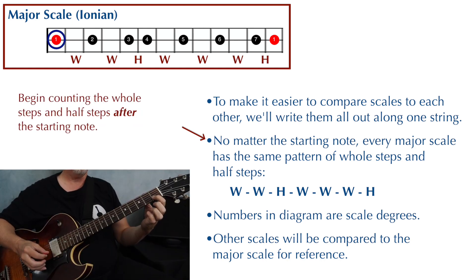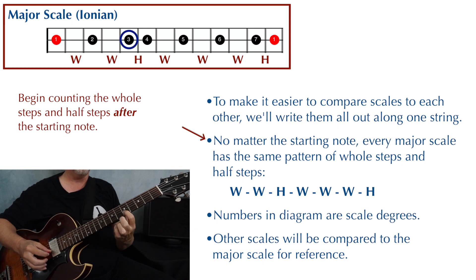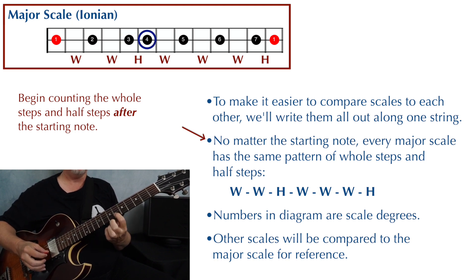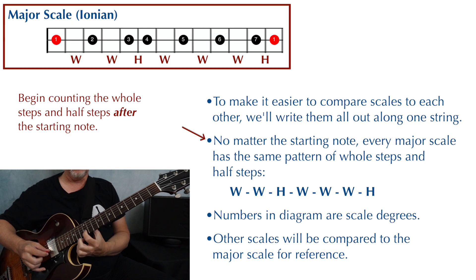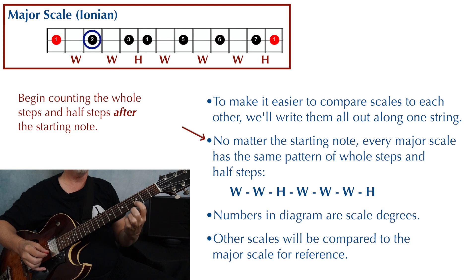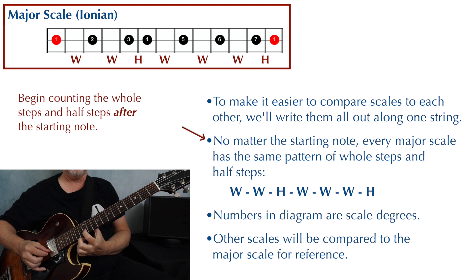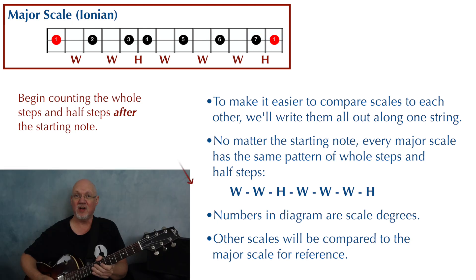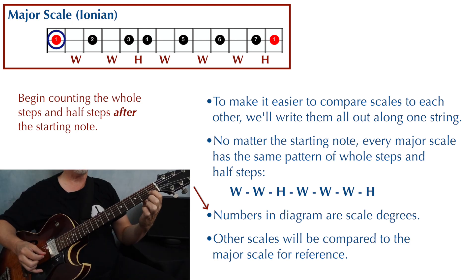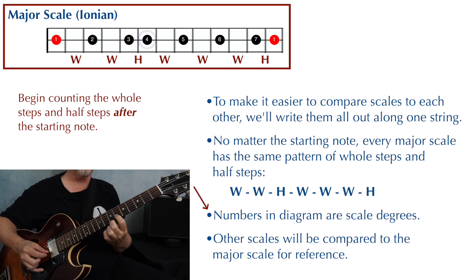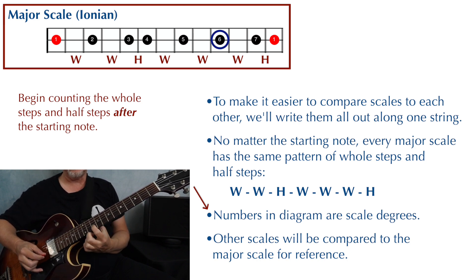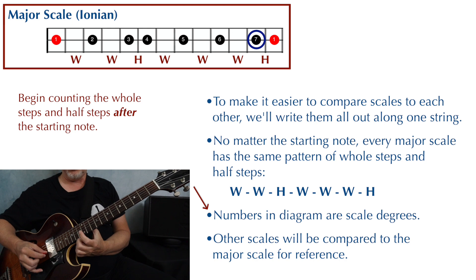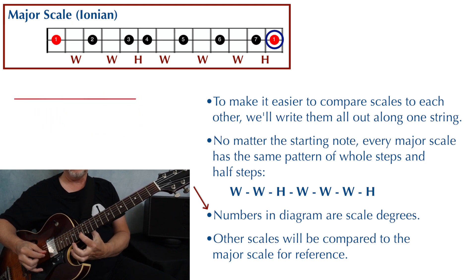Here's your starting point, and then start counting: whole, whole, half, whole, whole, whole, and half. Those numbers in the diagram refer to the scale degree. So here's scale degree one, two, three, four, five, six, seven. And then when we're at an octave above our starting note, we're back to one.